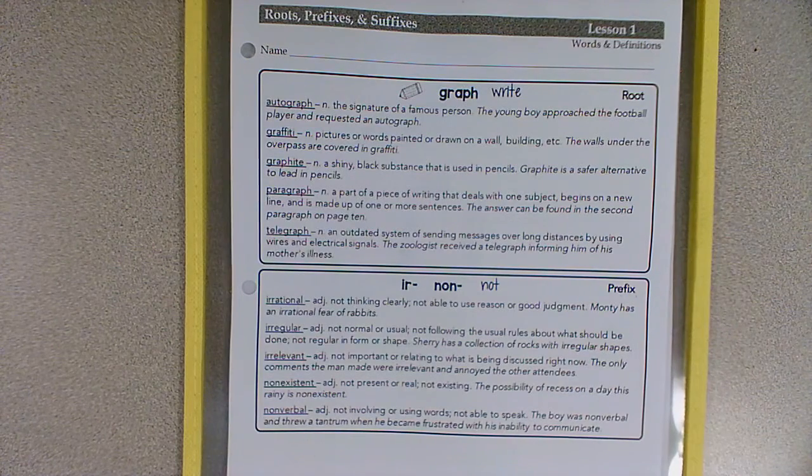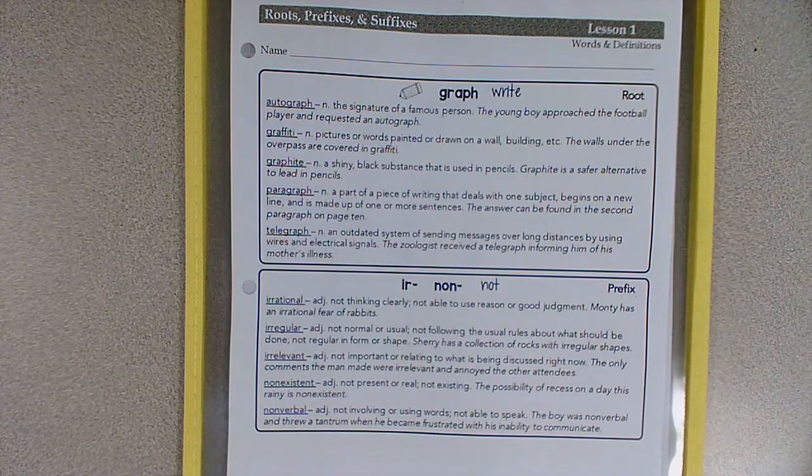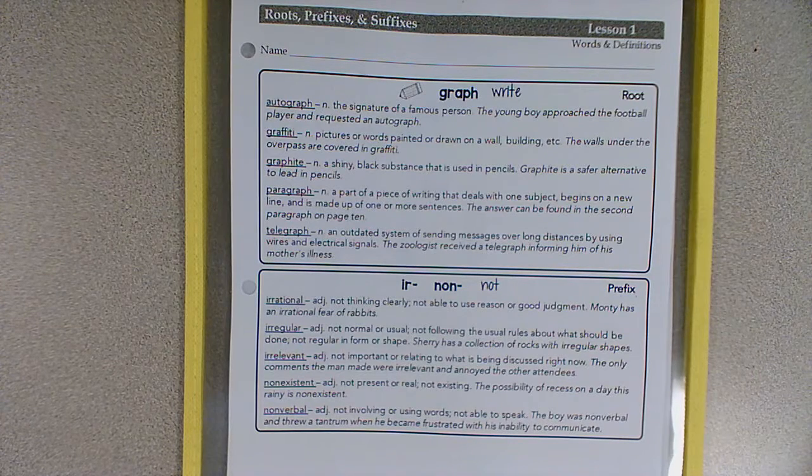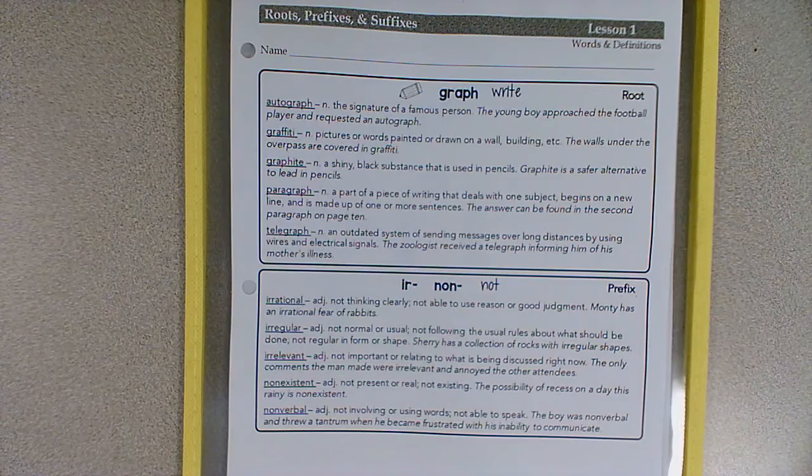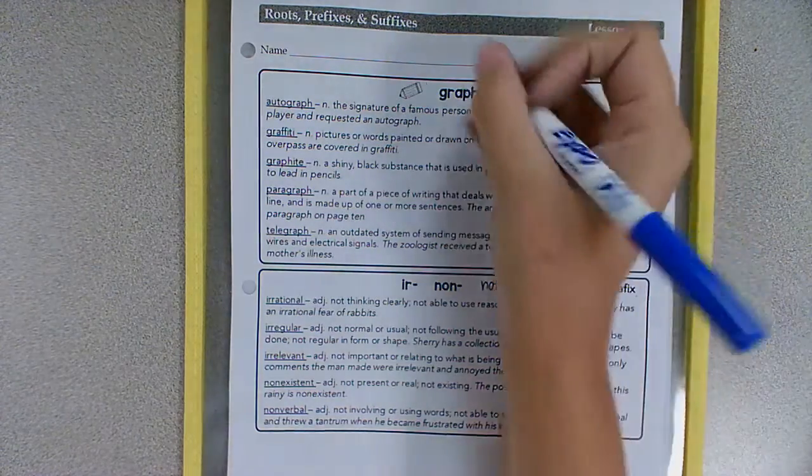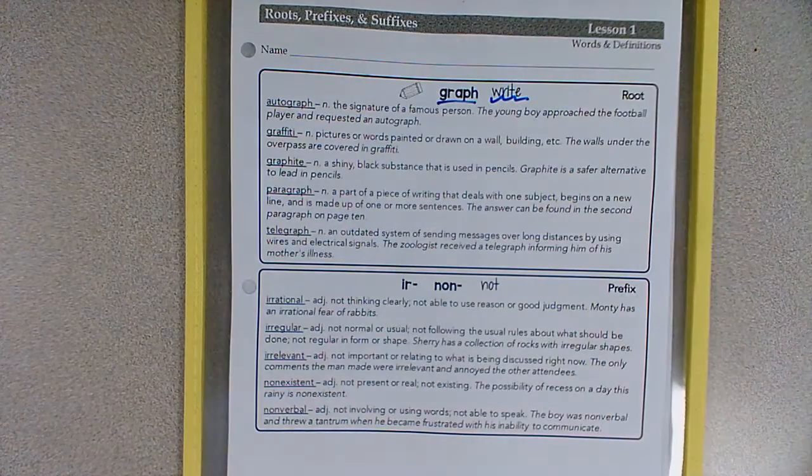Alright everybody, let's take a look at our lesson one for vocabulary. For vocabulary, we'll always have a root word and a prefix or a suffix. This week, our root word is graph, meaning to write.